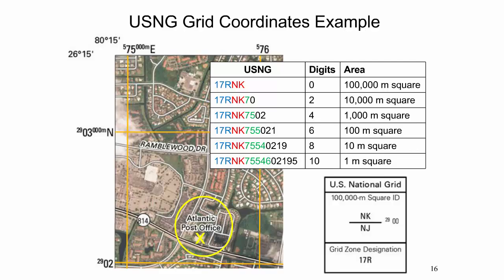If no grid coordinates are given, the described location lies somewhere within the designated 100,000 meter square. At the other extreme, a 10-digit number is the maximum, where 5 digits represent the easting and 5 digits the northing coordinate, indicating a location within a 1 meter square.